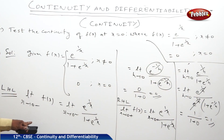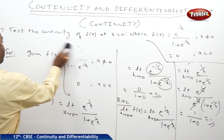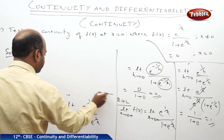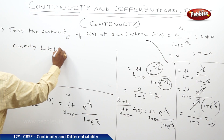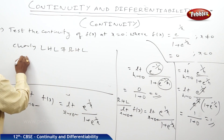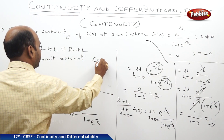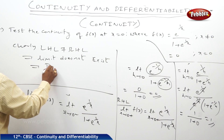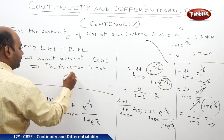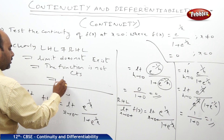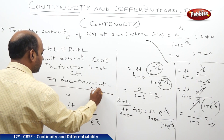So the left-hand limit is 0 and the right-hand limit is 1. Clearly, LHL ≠ RHL. That means the limit does not exist, and since the limit does not exist, the function is not continuous. Therefore, it is a discontinuous function at x = 0.